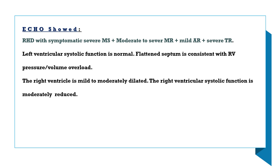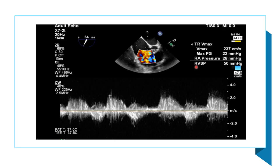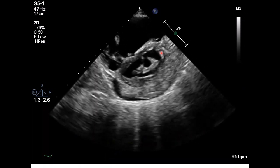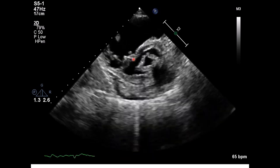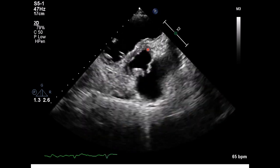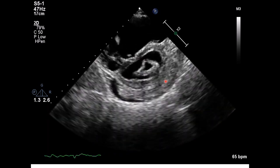Left ventricular systolic function is normal. The septum is flattened, consistent with right ventricular pressure or volume overload. The right ventricle is mild to moderately dilated, and right ventricular systolic function is moderately reduced. This picture of tricuspid regurgitation shows right ventricular systolic pressure of about 50 mmHg, with flattening of the septum and good contractility of the left ventricle.